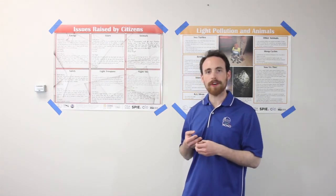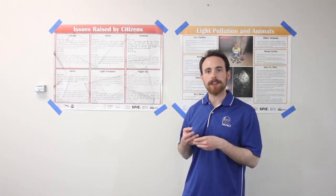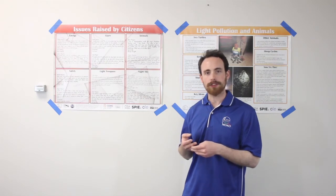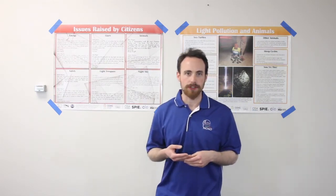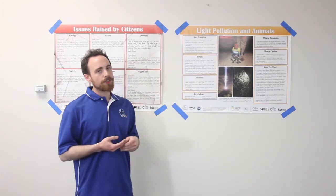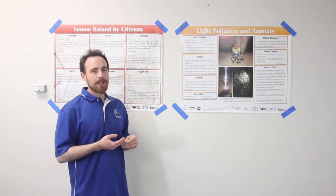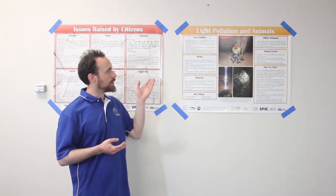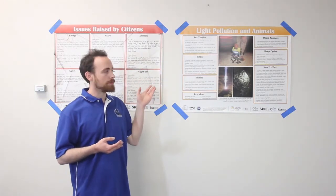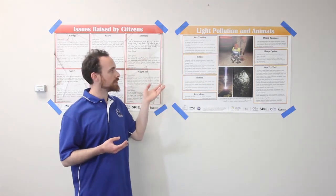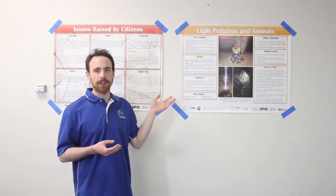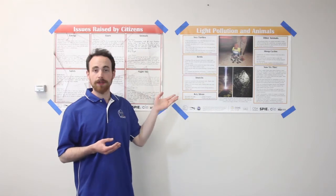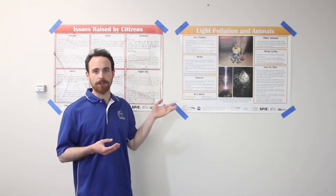In order to provide more information about the impact of light pollution on animals, next call their attention to the animals poster. This poster describes the impact of light pollution on animals including sea turtles, birds, and insects, as well as other animals, and also provides some information on the impact of light pollution on sleep cycles in both humans and animals.